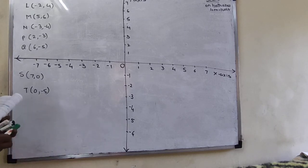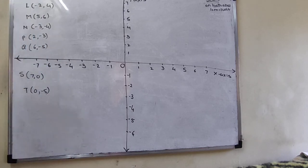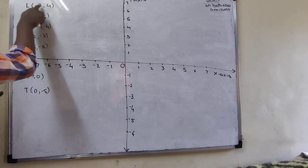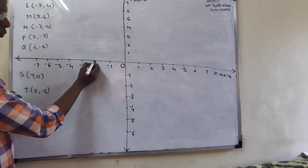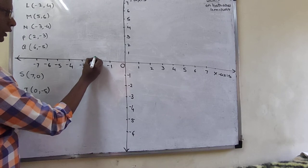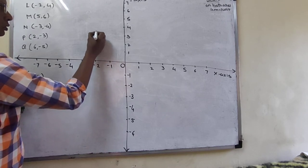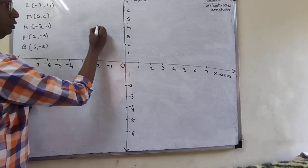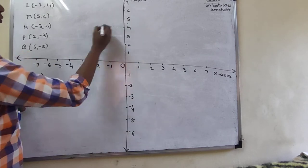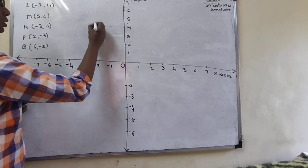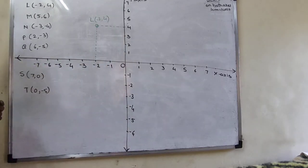See the first point: L(-2, 4). Minus-plus means it is in the second quadrant. The x-coordinate is -2 and the y-coordinate is 4. You draw dotted lines — go to -2 on the x-axis and 4 on the y-axis. This gives you point L at (-2, 4).